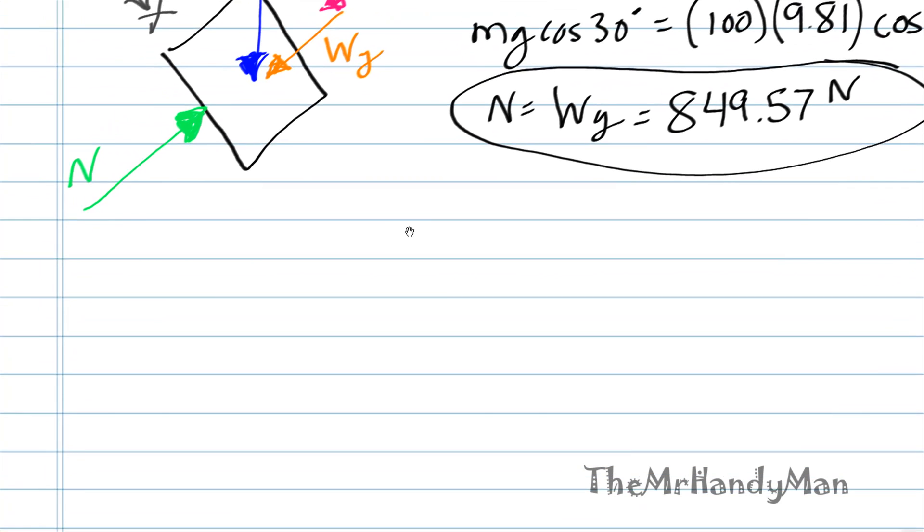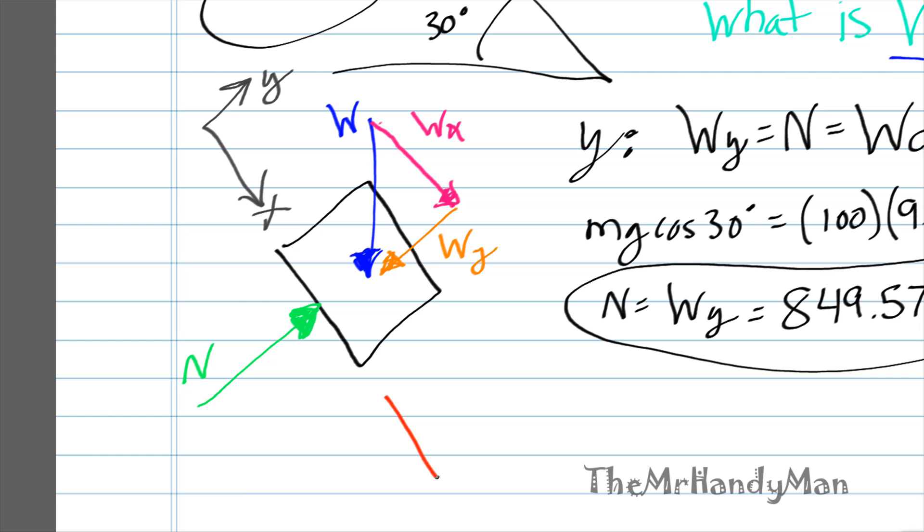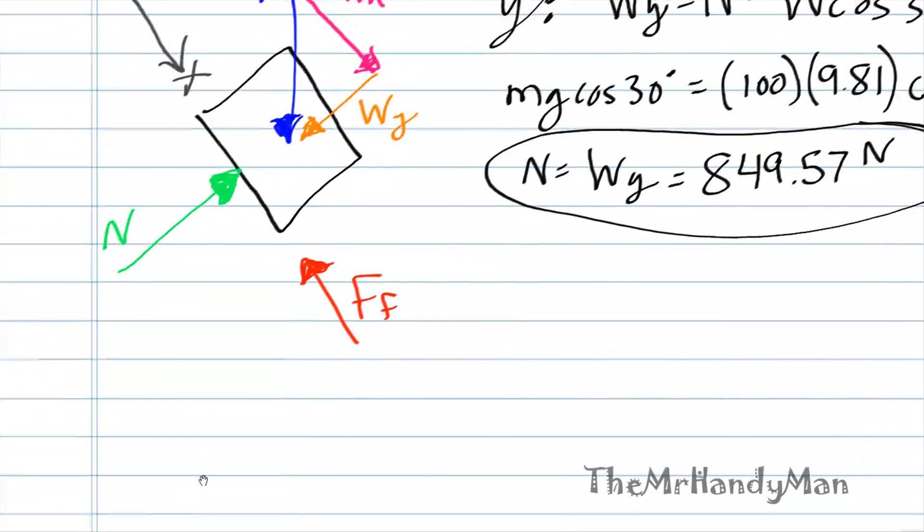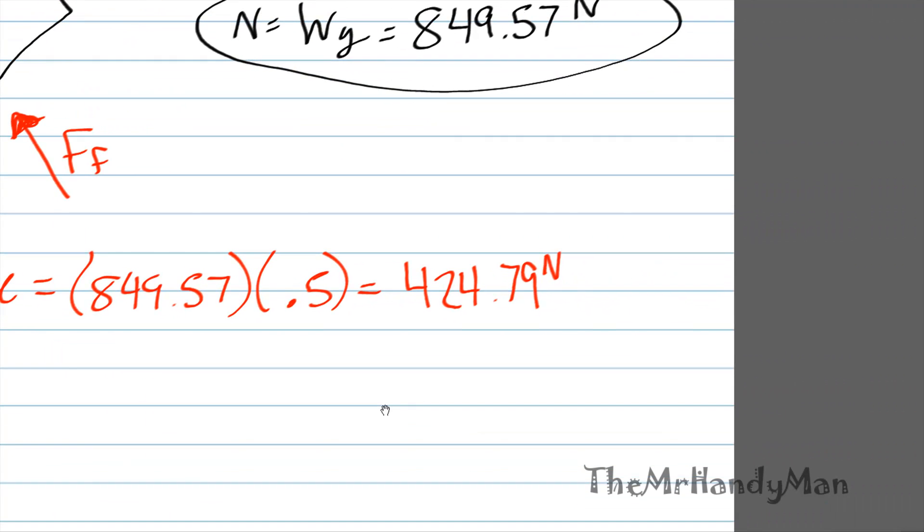So now we take that normal force and we project it into what will be known as our friction force. Resisting any motion. We've got to solve for that friction force. Friction force is going to have the same function as before. Friction force is equal to normal times the coefficient of friction, which equals 849.57 times 0.5 coefficient of friction, which we solve for, and it equals 424.79.